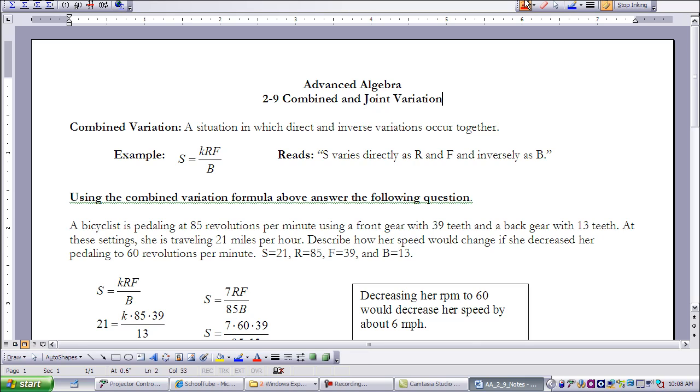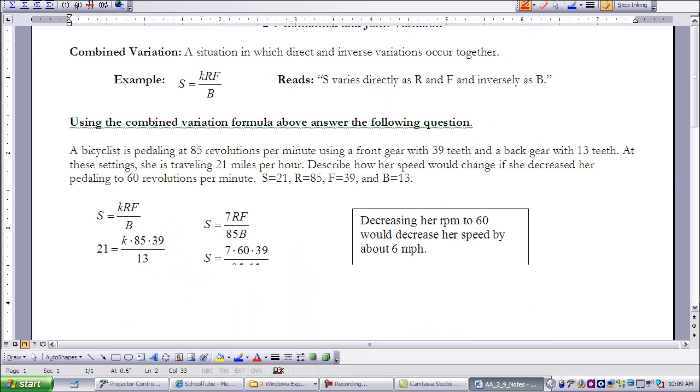When we did the equation in Lesson 2-8, we found that M varied directly as W and the square of T, while M varied inversely as D, if you remember that large problem we did at the end. So we can use combined variation formulas to answer several questions.